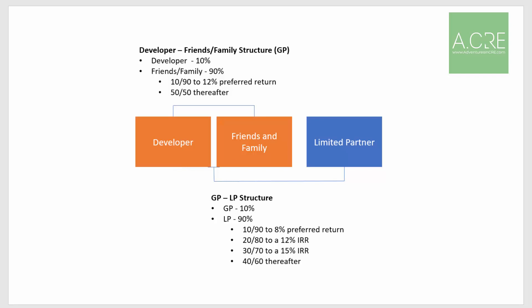In this hypothetical structure, we have the developer who puts in 10% of what's called the GP share, with friends and family coming up with the other 90%. The developer offers a 12% preferred return, shared pro rata based on equity invested by each party. And then above a 12% return, the split is 50-50.